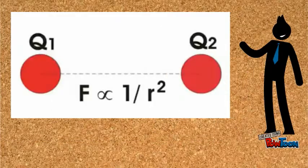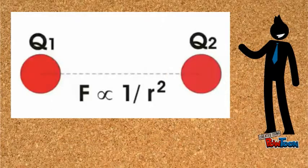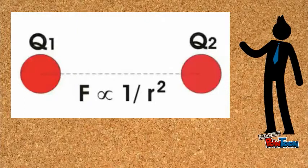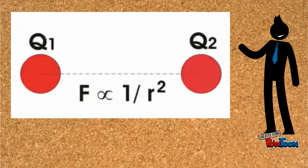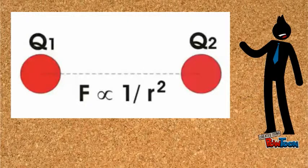If the distance between their centers is R, it can be proved that force acting on them is inversely proportional to R-squared.